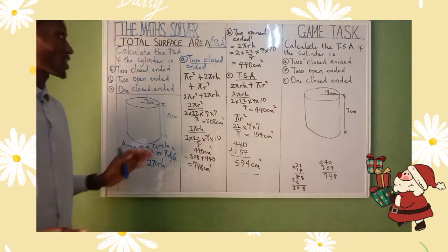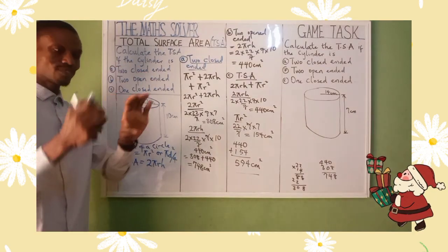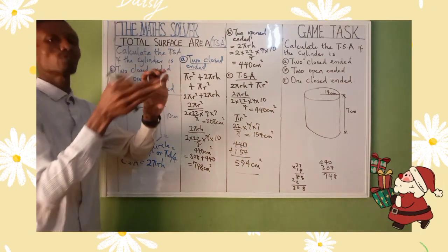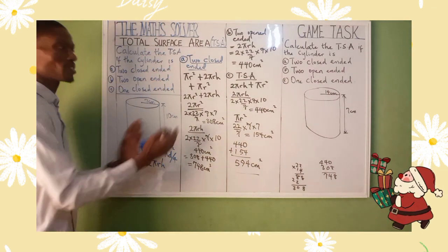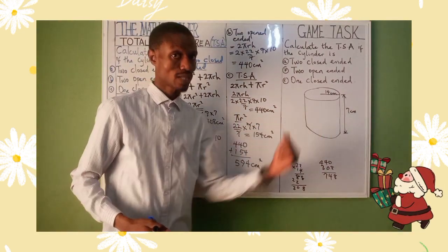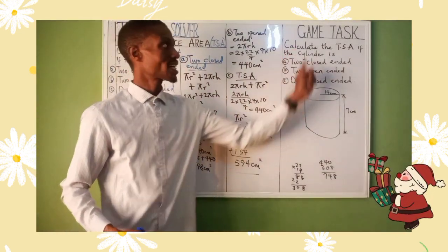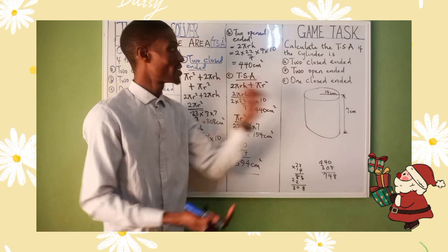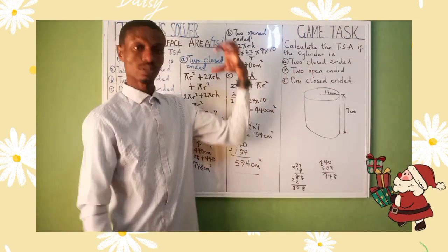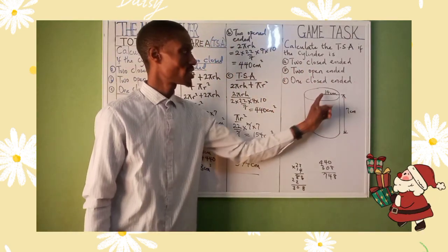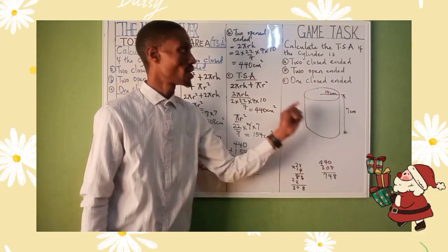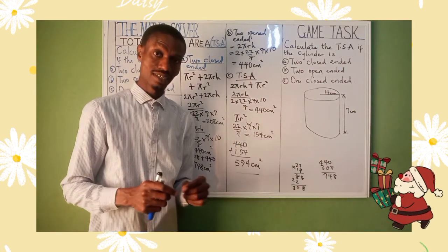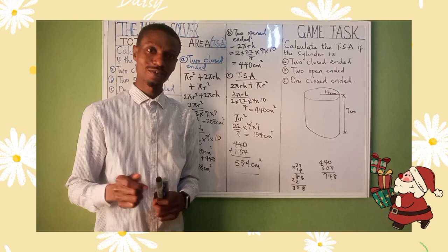For your cylinder, remember there are three surface parts: two circles and the curved surface area. For your classwork, calculate the total surface area of a cylinder with radius 14 and height as given, for each case: two closed-ended, two open-ended, and one closed-ended. Submit your answer in the comment section. Please subscribe — have a nice day!